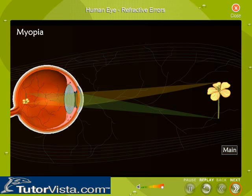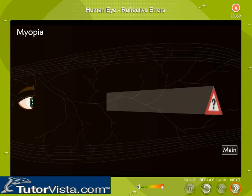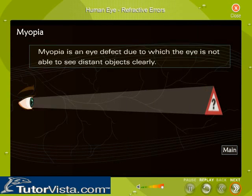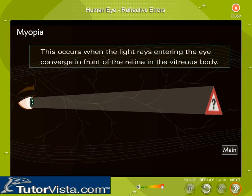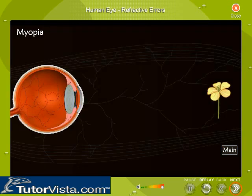Myopia is an eye defect due to which the eye is not able to see distant objects clearly. This occurs when the light rays entering the eye converge in front of the retina in the vitreous body. Here you can see the formation of an image in a normal eye and in a myopic eye.